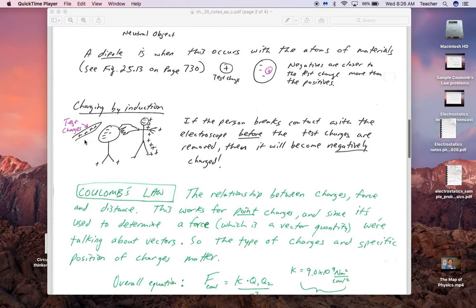Charging by induction can happen this way: if we bring a test charge—and test charges are normally we thought it was a small positive charge but could be positive or negative, I suppose—like a charged rod close to something, and this is an electroscope. I'm going to try to record some demos at school and upload that video.